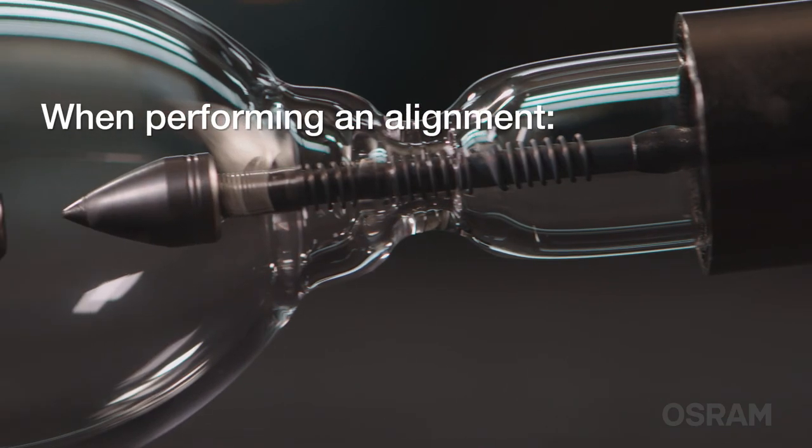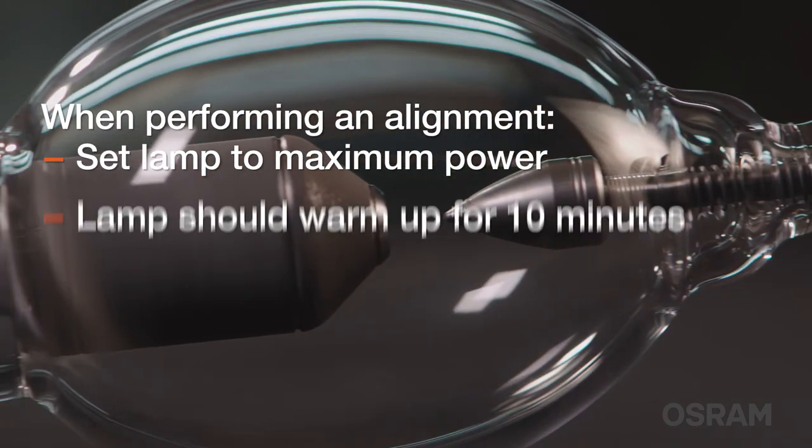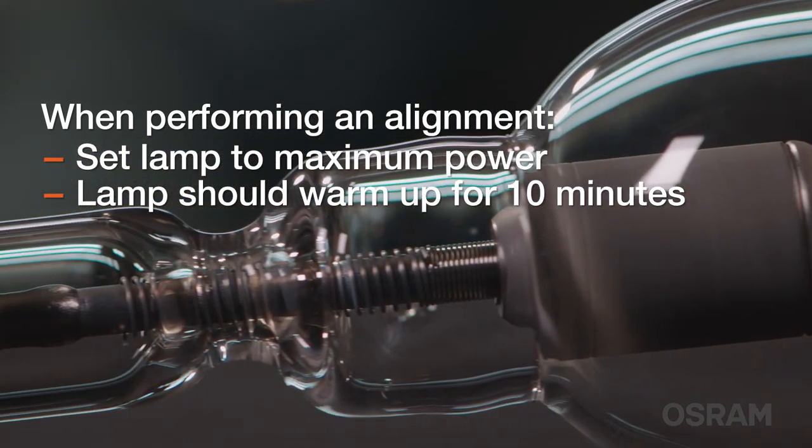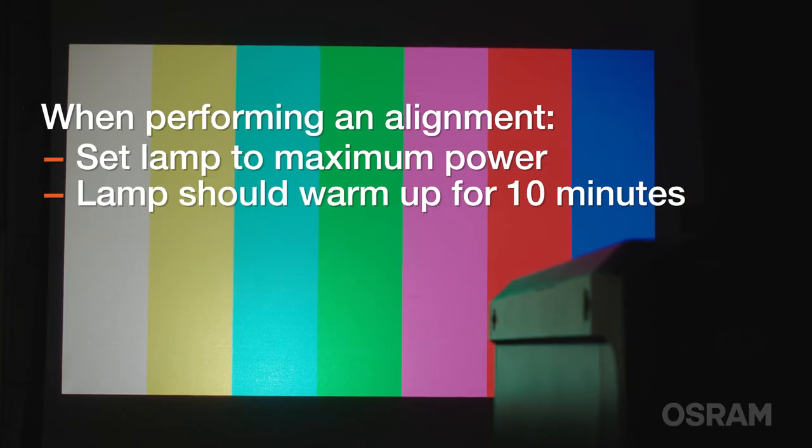When performing an alignment, the lamp should be set to maximum power and allowed to warm up and stabilize for a minimum of 10 minutes prior to starting the procedure. Where possible, have the projector display a white test pattern on screen, allowing you to inspect the screen for light uniformity during the alignment process.